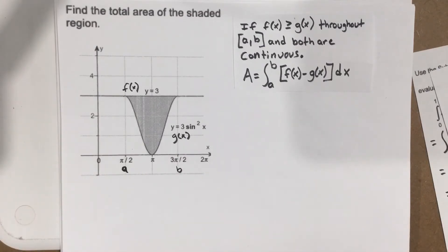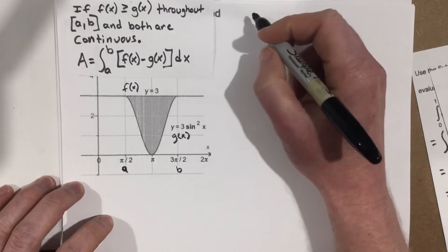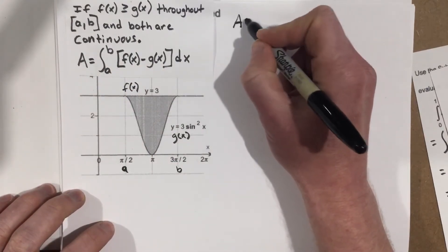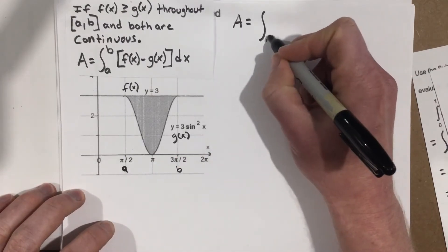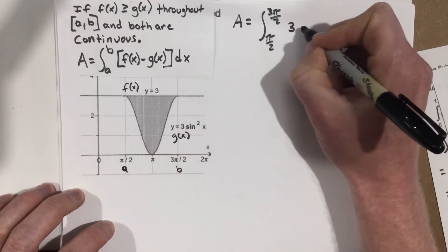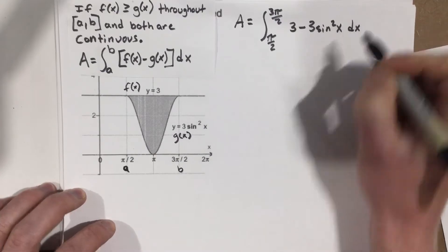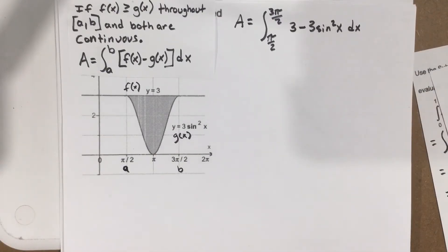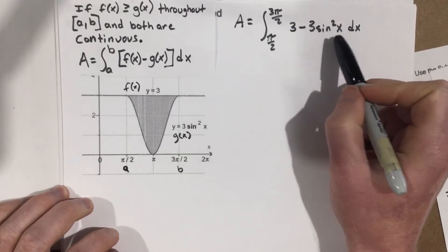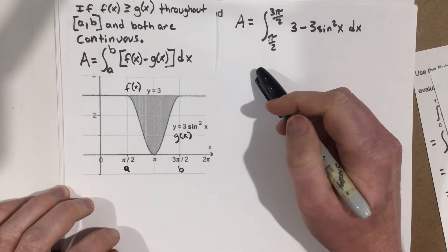Now that we've got that taken care of, let's use this formula to solve. The area equals the integral from pi over 2 to 3 pi over 2 of 3 minus 3 sine squared x dx. Now we have to start using some trig. My original thought was: can we do a u-substitution? If we write this as sine x squared and let u equal sine x, the derivative of sine gives cosine, but we're not canceling anything out, so u-substitution won't work here.